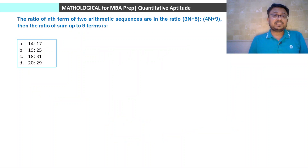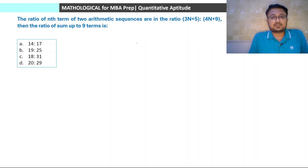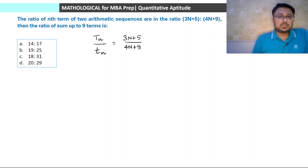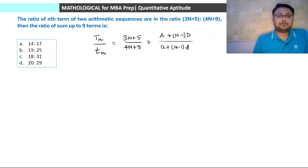The ratio of the nth term of 2 arithmetic sequences is in the ratio (3n + 5) to (4n + 9). We have to find the ratio of sum up to 9 terms. The ratio of nth terms is given. If we take capital Tn for the first and small tn for the second, their ratio is (3n + 5)/(4n + 9). The nth term is a + (n-1)d. So capital A + (n-1)D divided by small a + (n-1)d equals (3n + 5)/(4n + 9).